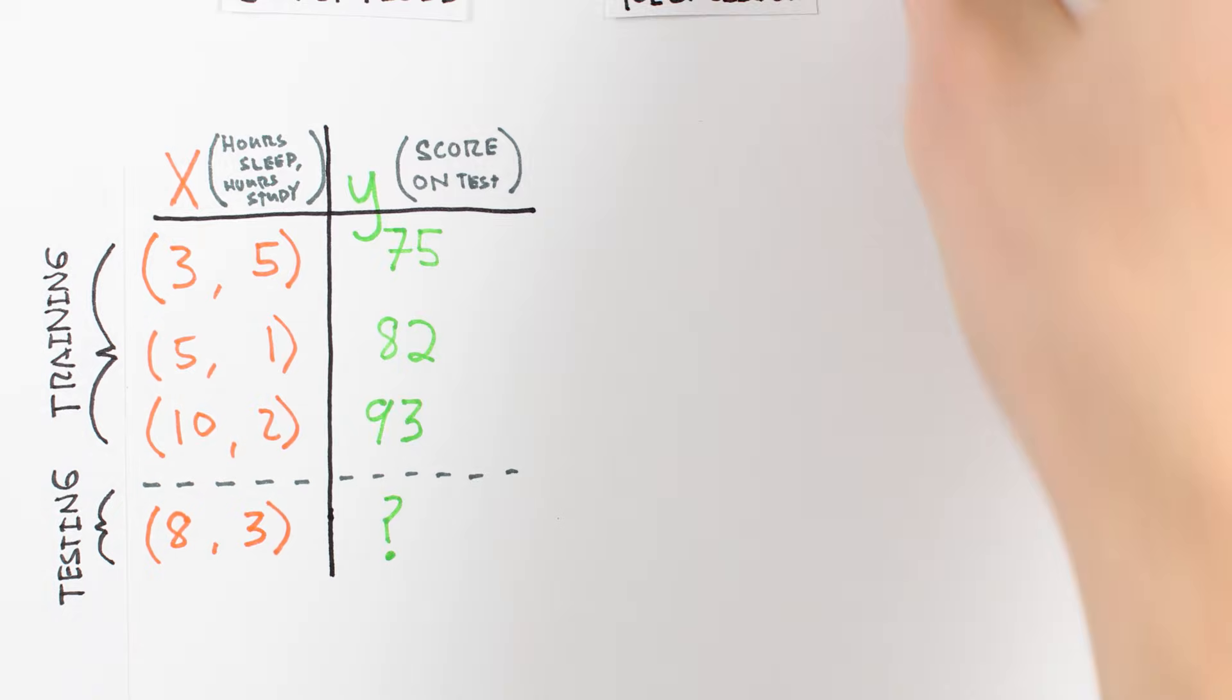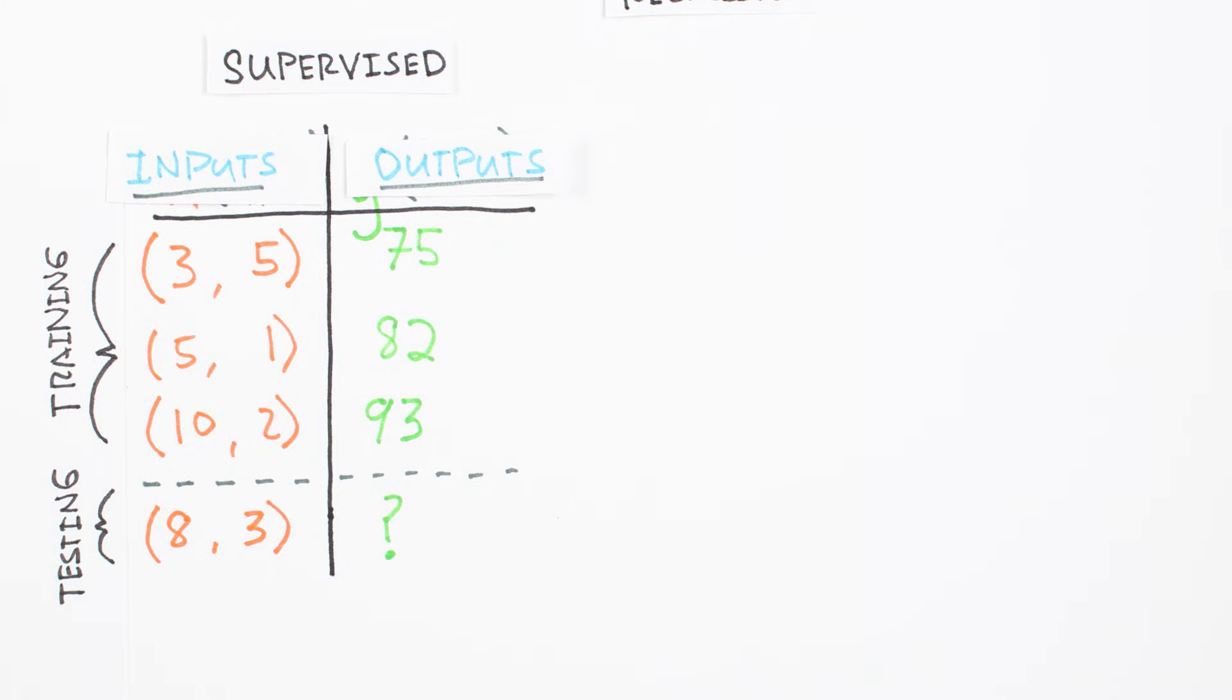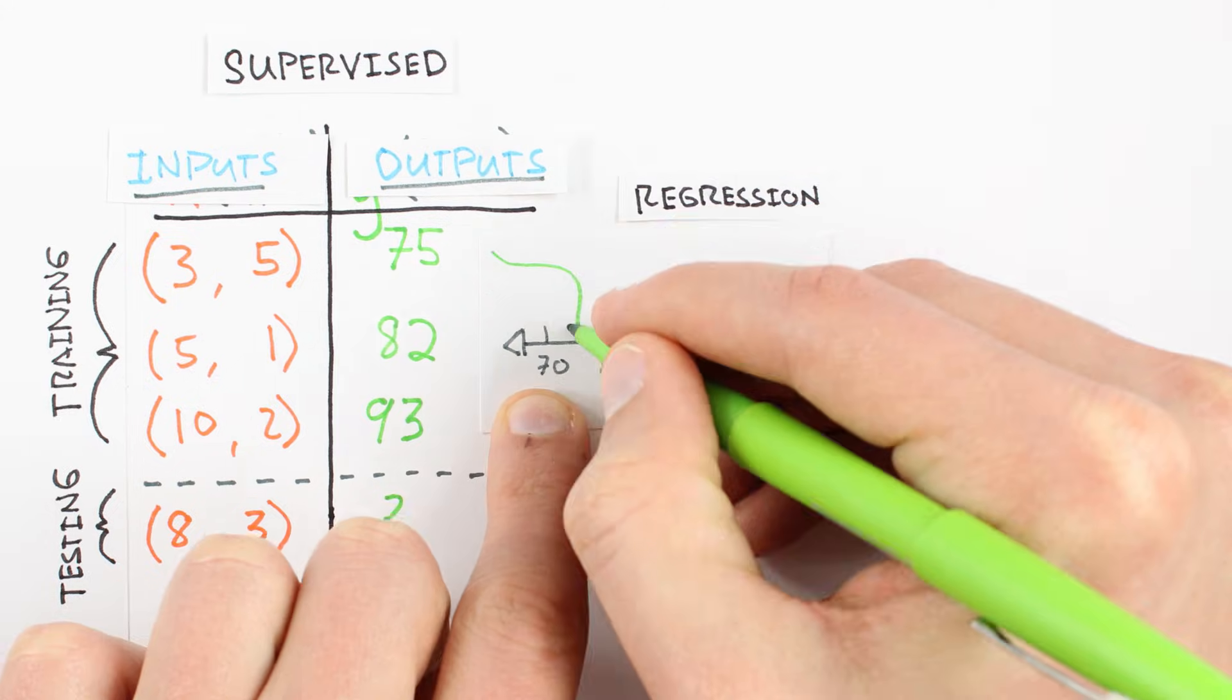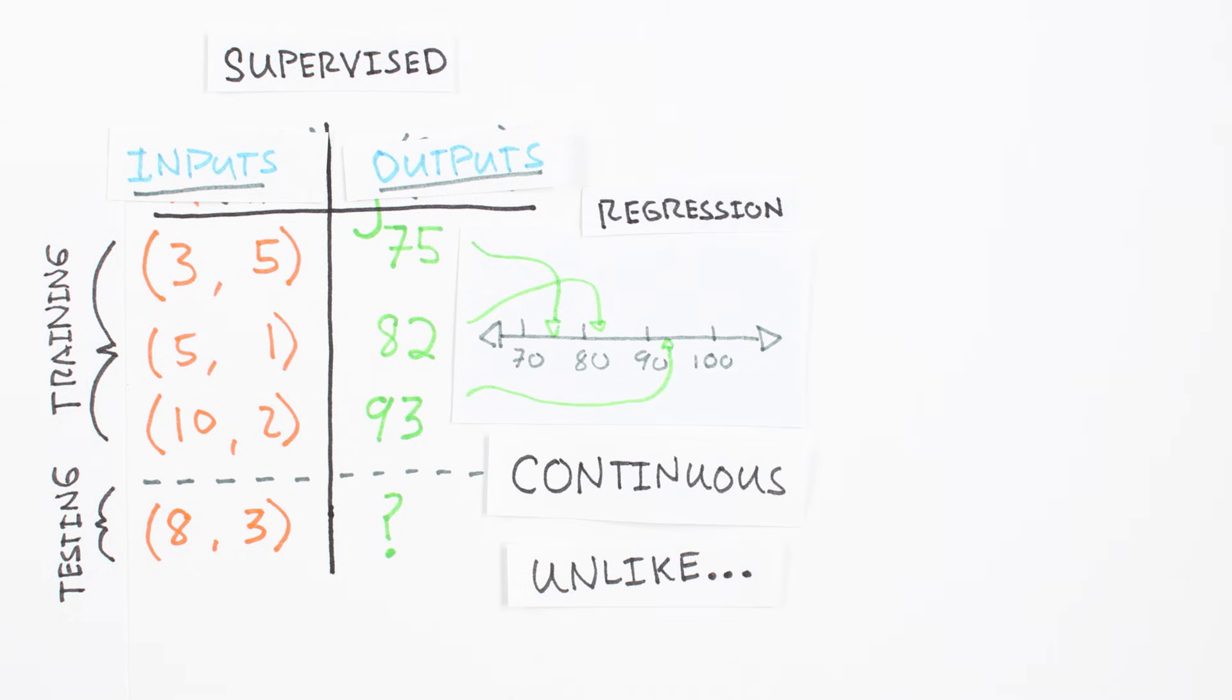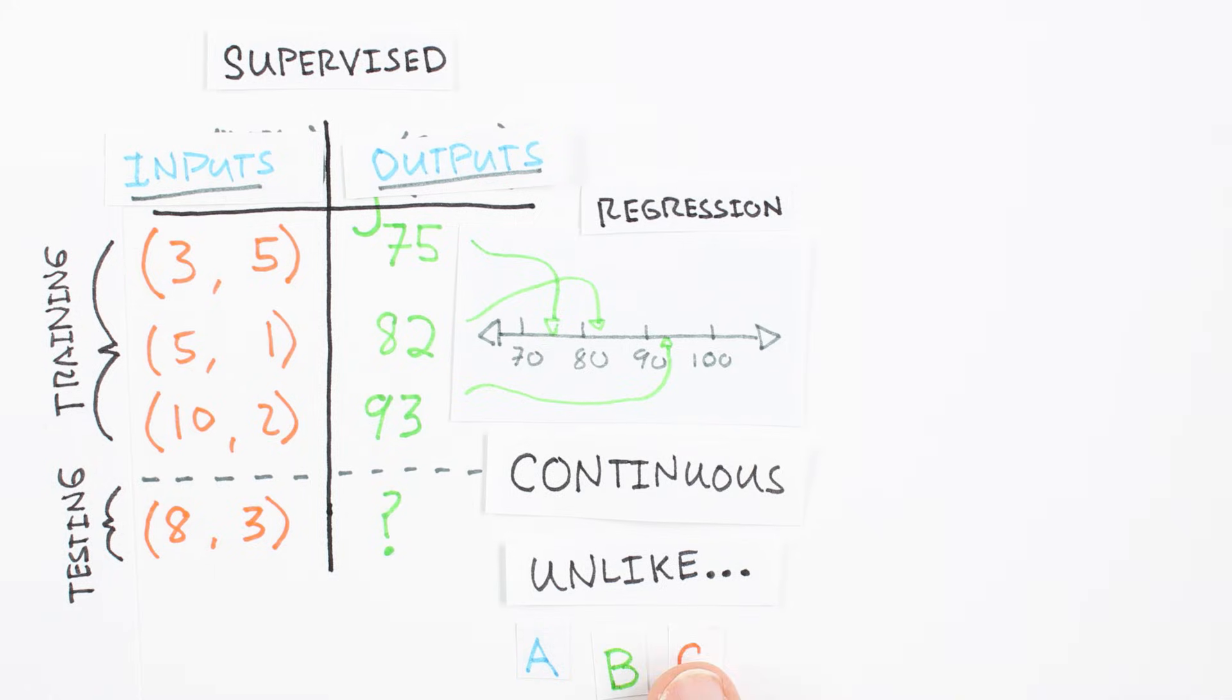It's supervised because our examples have inputs and outputs. It's a regression problem because we're predicting your test score, which is a continuous output. If we were predicting your letter grade, this would be called a classification problem and not a regression problem.